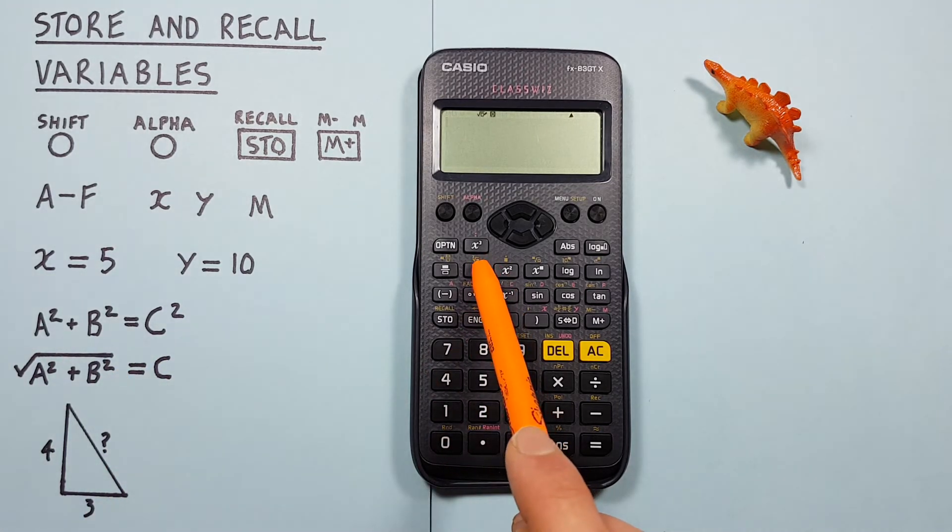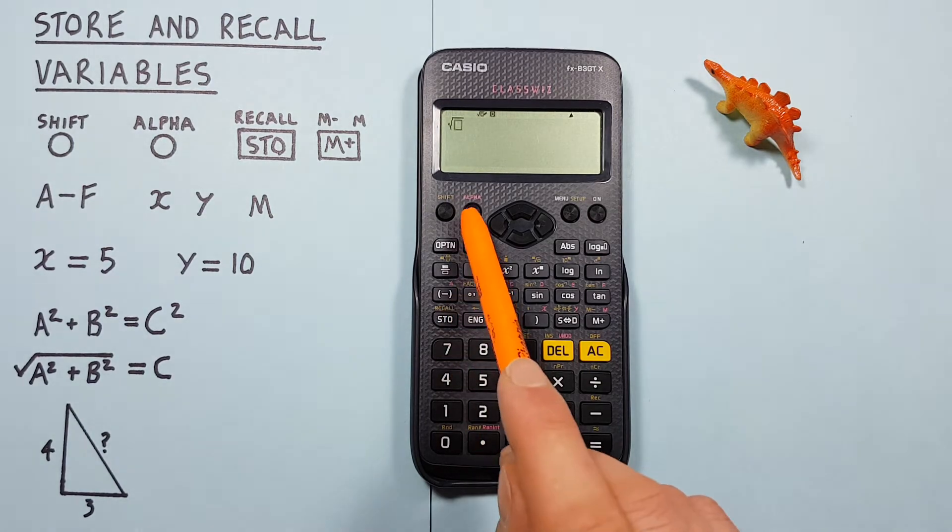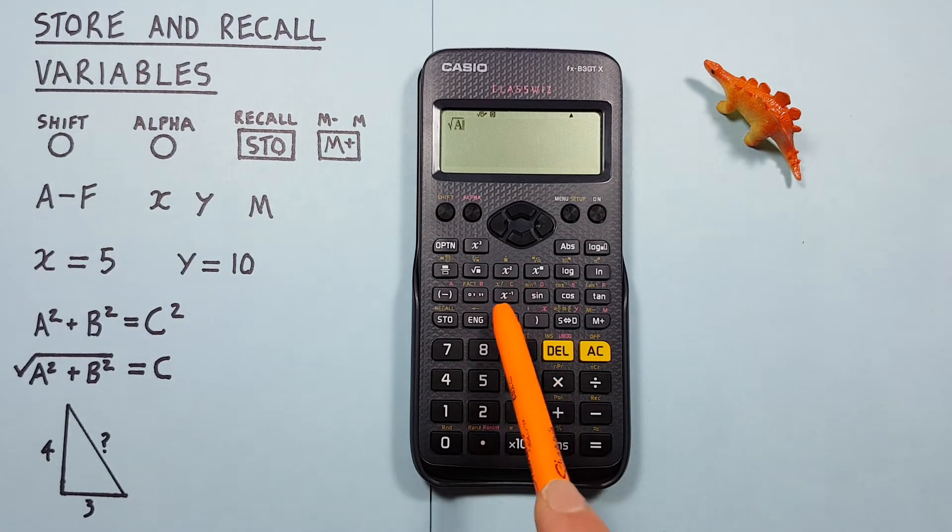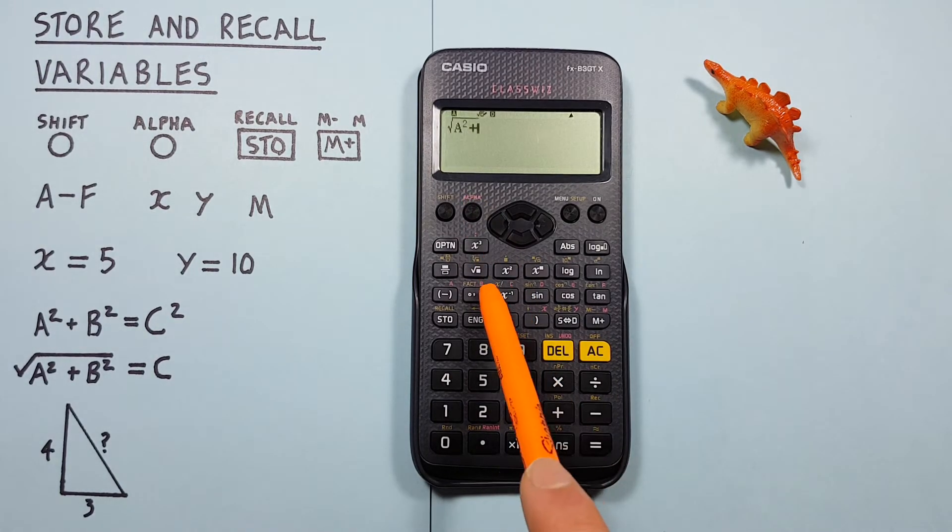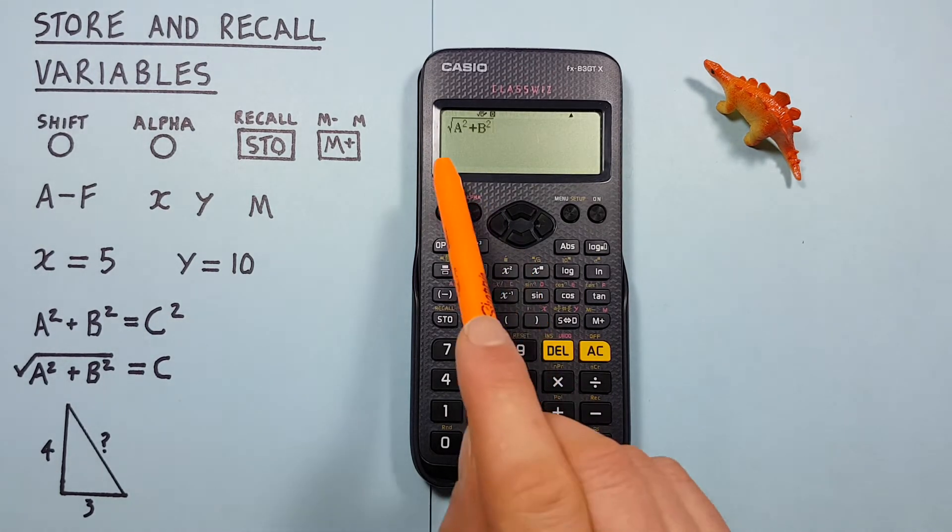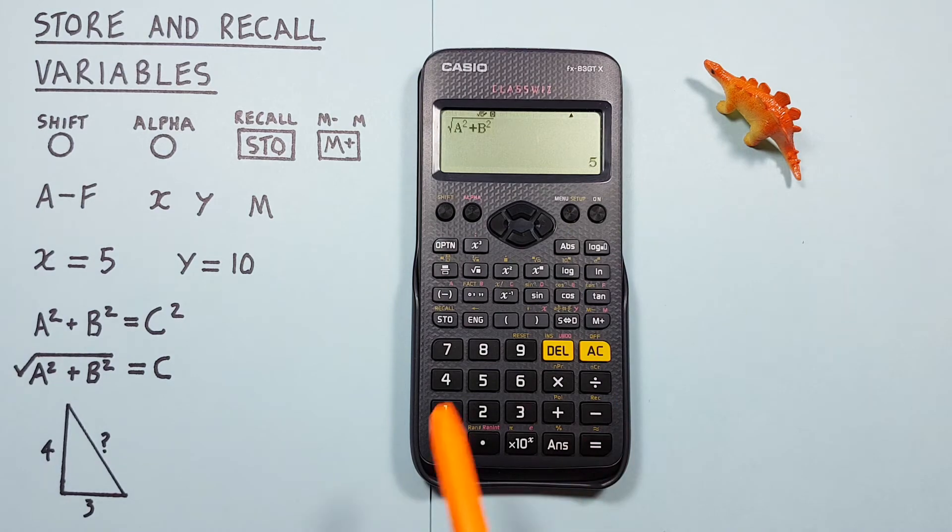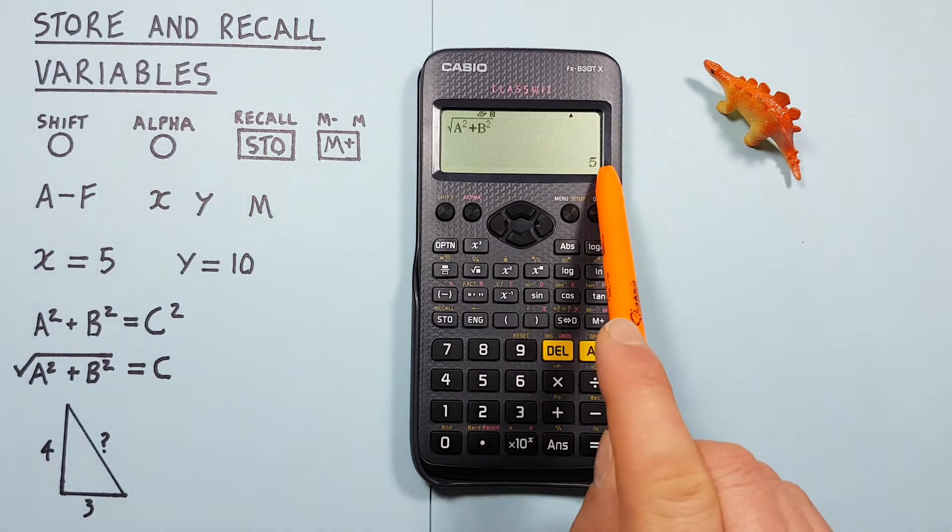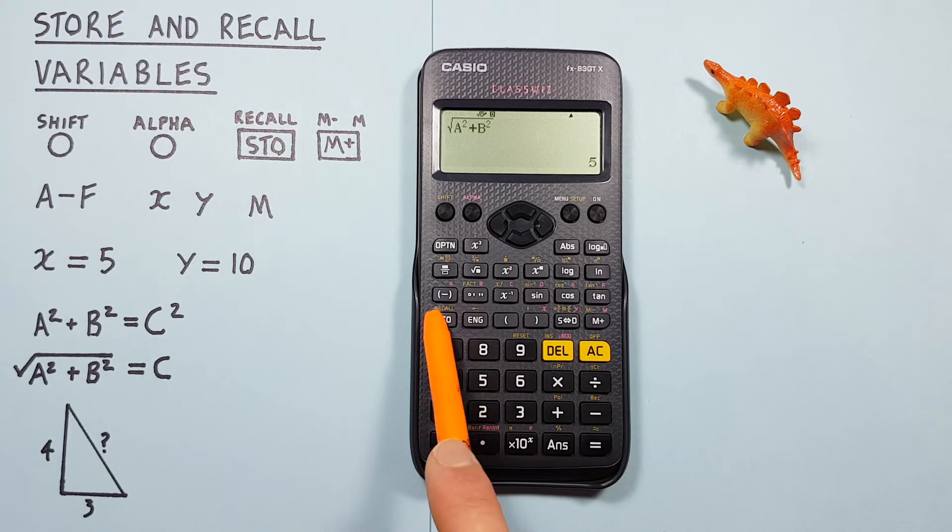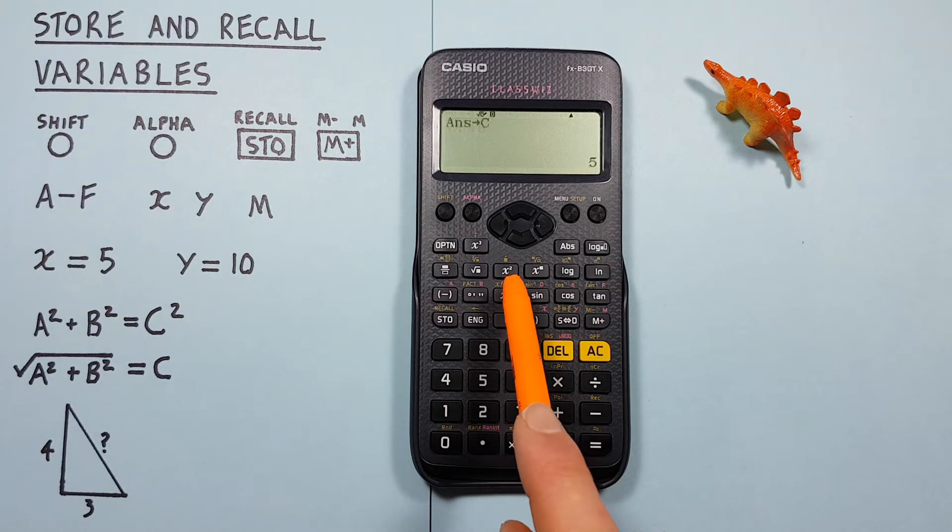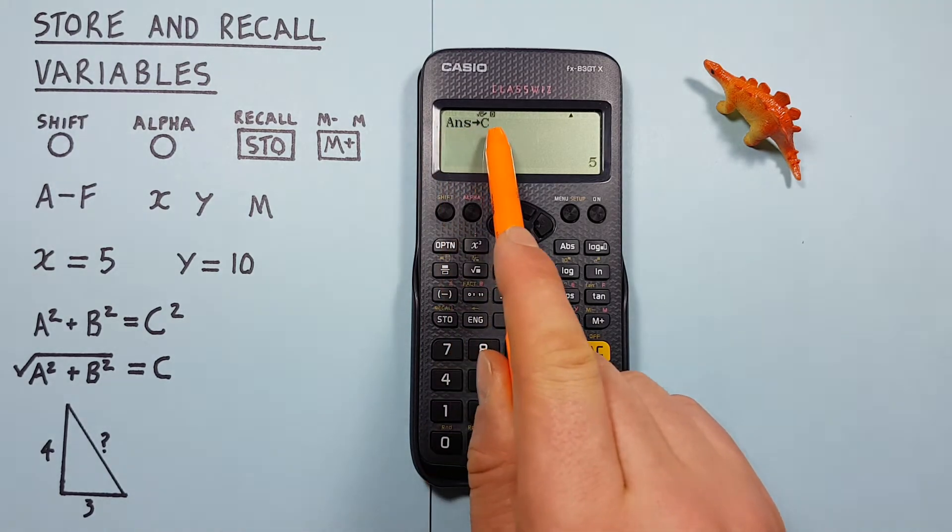So we go square root alpha A squared plus alpha B squared equals and we get the result of 5 which is our C side. And we can then store this as our C memory slot in case we need to use it later. Answer into C.